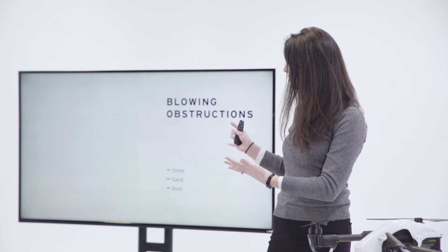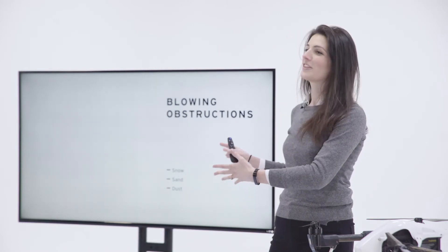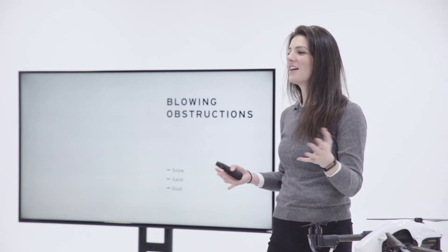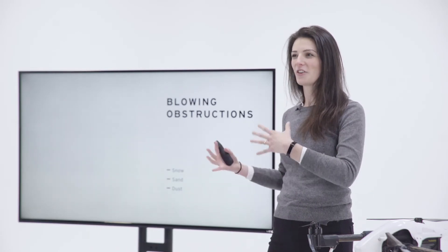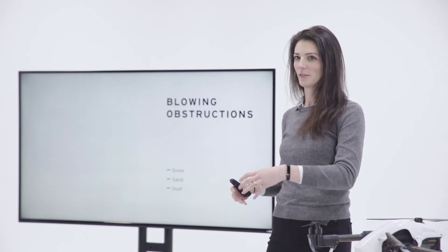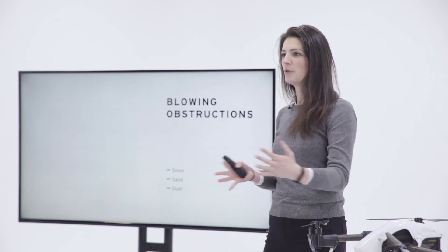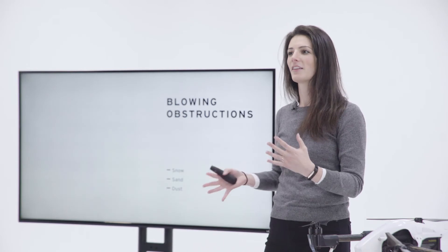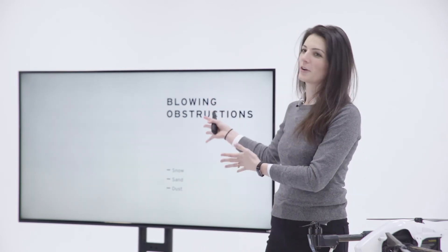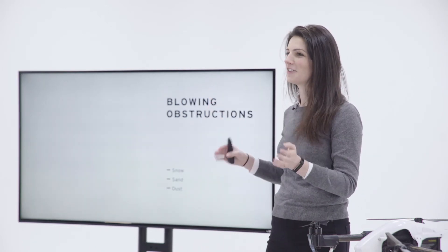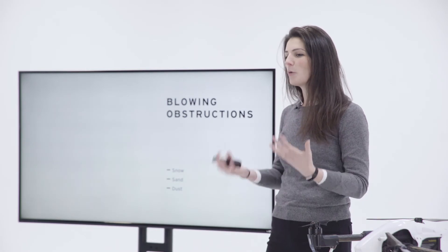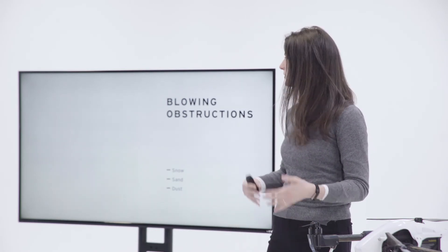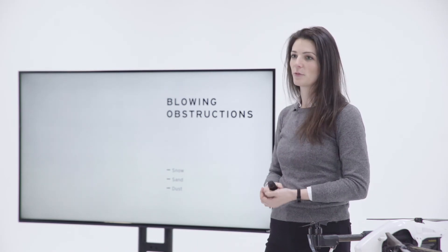Blowing obstructions — this is a photo of blowing obstructions. When you have snow that's blowing across the road, if you've ever been driving in that situation, it can create some weird illusions where you feel like you're moving from side to side as well as traveling forwards, and can completely obstruct your visibility so you can't see anything at all — it's just completely white. You want to avoid flying in those situations, not only because it would be pretty uncomfortable for the pilot, but also not great for the aircraft's performance.